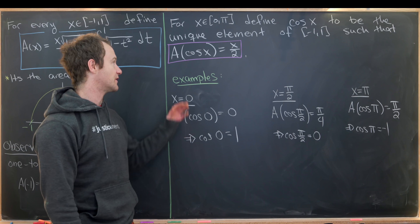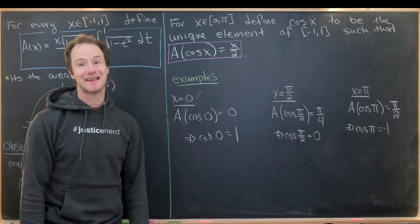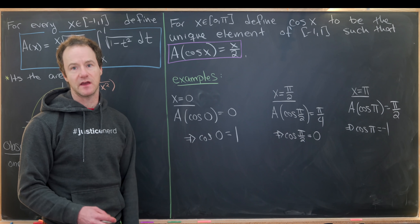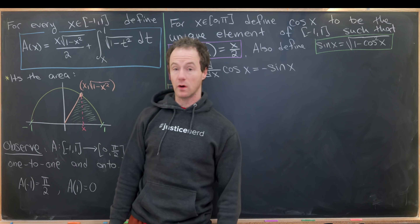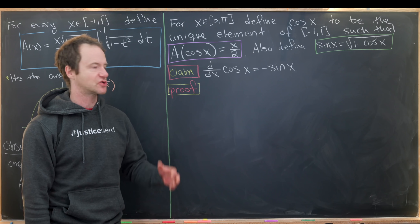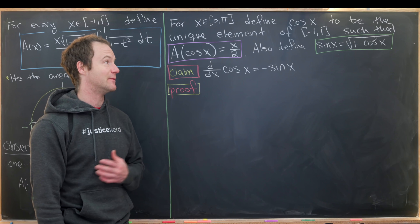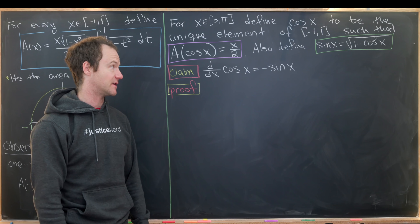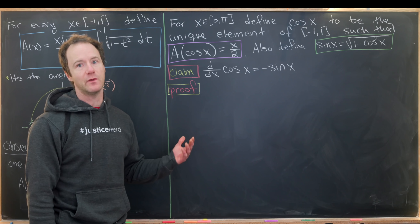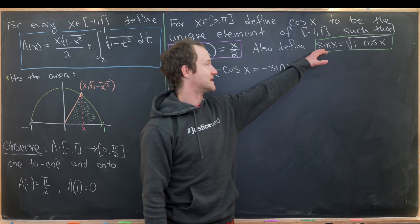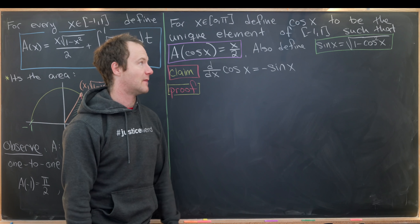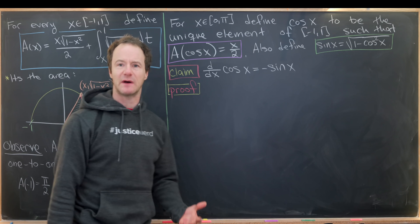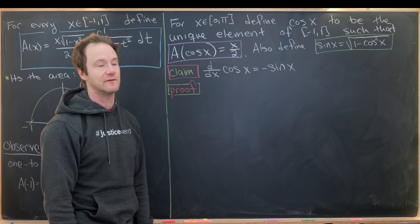The next thing to show is that the cosine function defined this way satisfies the same derivative rule it would using the standard method. We also need the sine function, which we define as the square root of one minus cosine squared. This is looking ahead toward identities we'd like to satisfy.